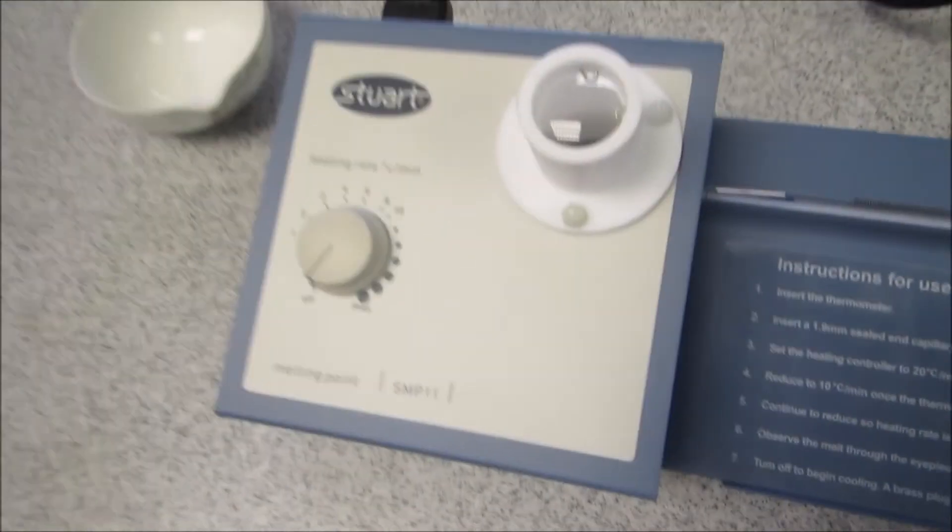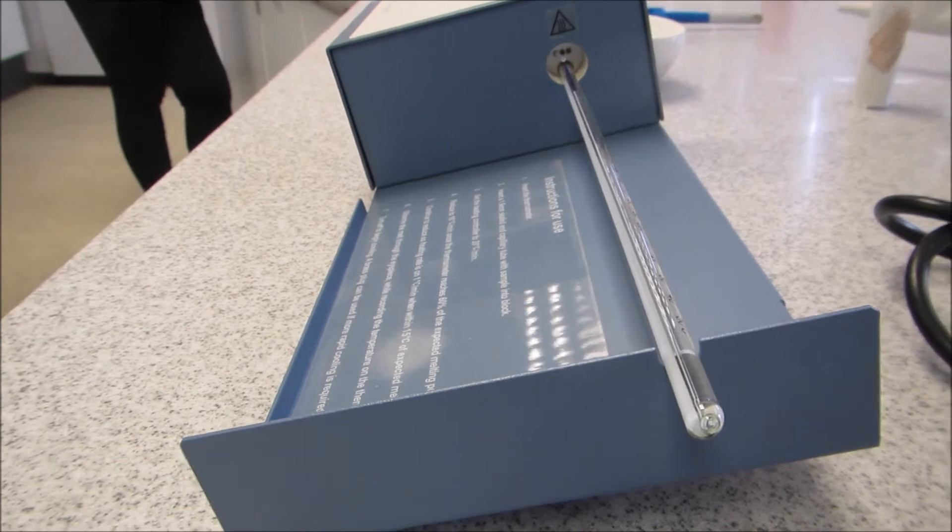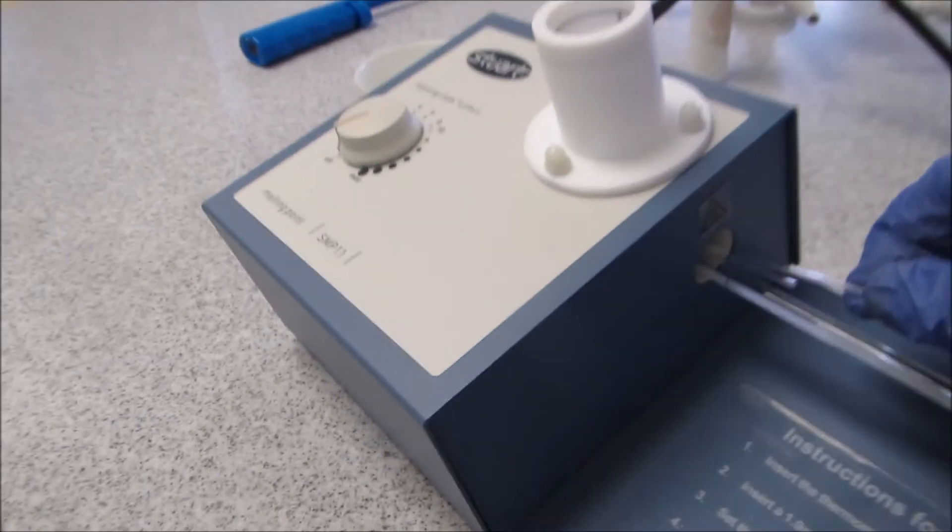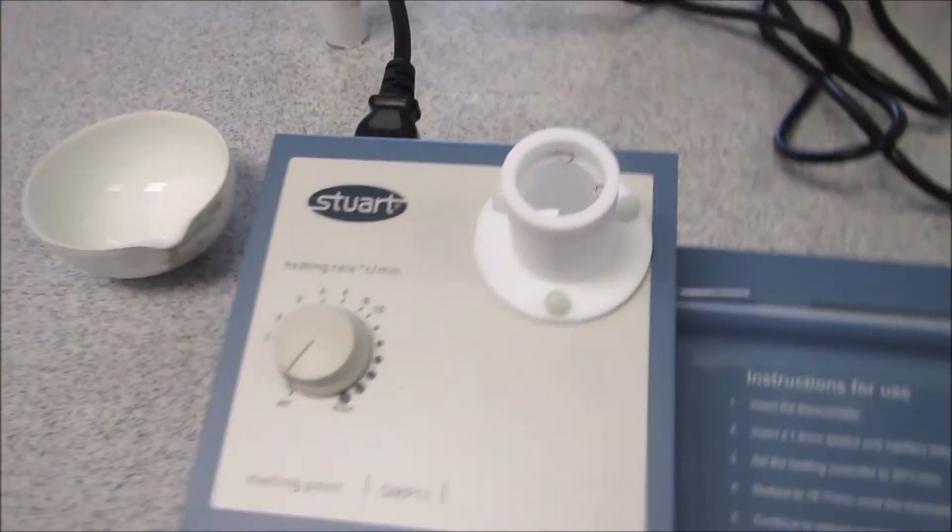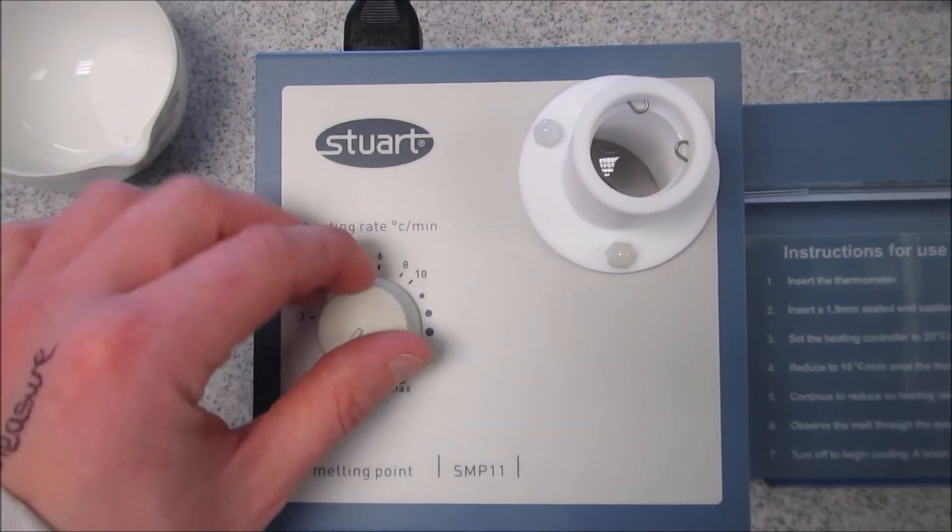So the next thing I'm going to do is take my melting point apparatus and put the tube in the side. So if I get it there, you can slightly see the thermometer hole and there's three small holes above it. I've already put one sample tube in that I've prepared with the aspirin and now I'm going to turn it on.